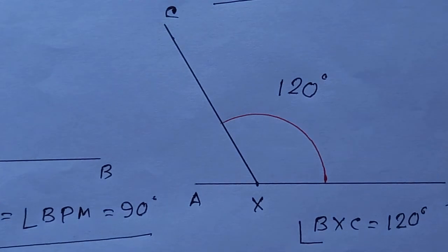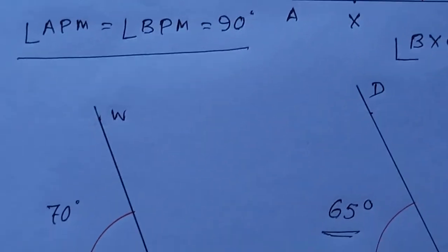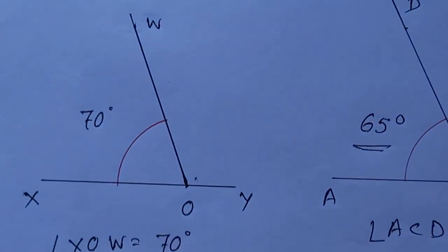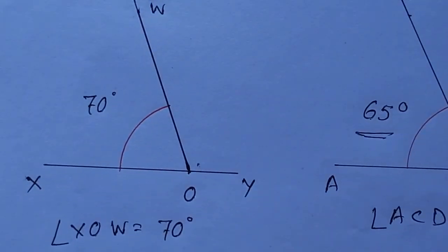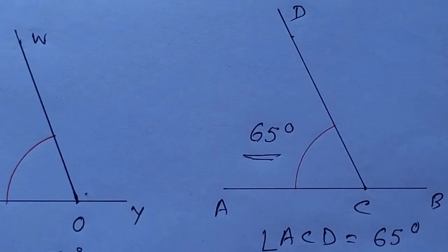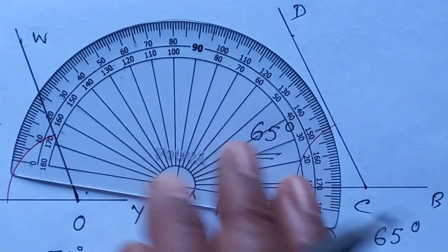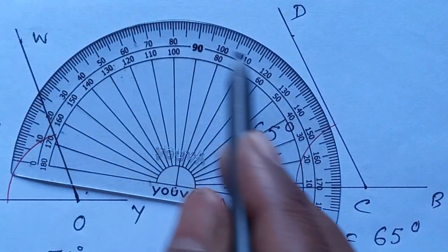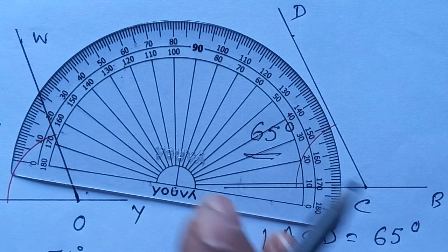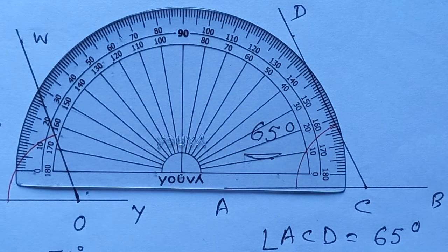120 degrees, 120 degrees, 70 degrees, 65 degrees. In our analysis, you can see the point is 0 or 180 degrees. We will be able to follow our steps. As soon as we get started, we will continue to encourage you.